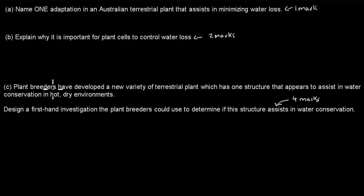Part C: plant breeders have developed a new variety of terrestrial plants which has one structure that appears to assist in water conservation in hot, dry environments. Design a first-hand investigation that plant breeders could use to determine if the structure assists in water conservation. That's worth four marks. When you're ready, press pause, attempt the question, and then press play when you've attempted the question.